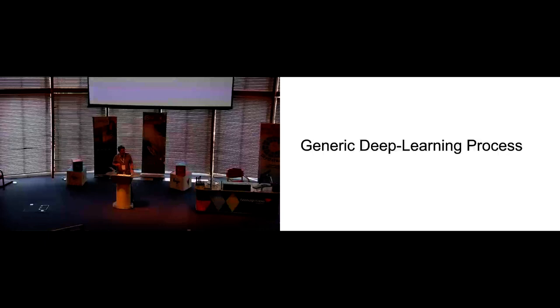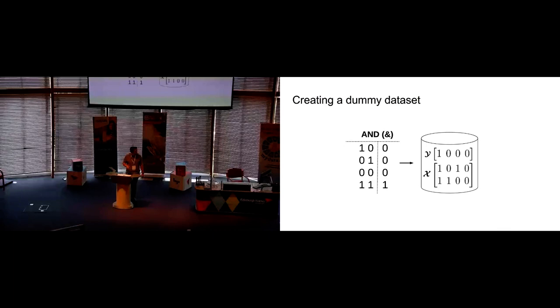So first of all, the generic deep learning process. If we take the most simplistic database that we can possibly think of, that's just what's created out of an AND condition. The AND condition is only ever true if both the preconditions are true. We can turn this into a dataset of x and y values. The x values are the inputs, and the y values are the outputs, or the labels.